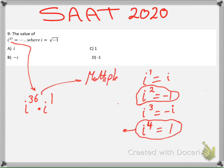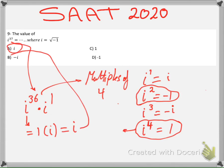So i power 36 gives me 1, multiplied by i, which equals i. So the answer is A.